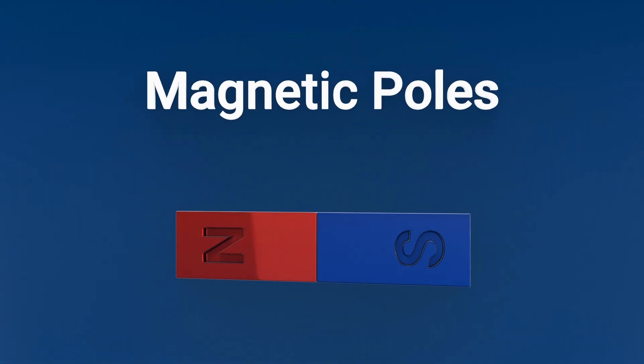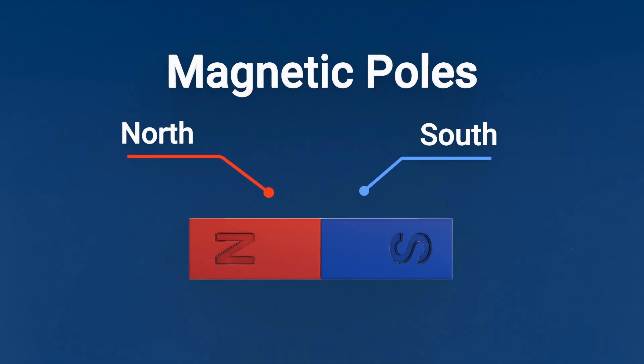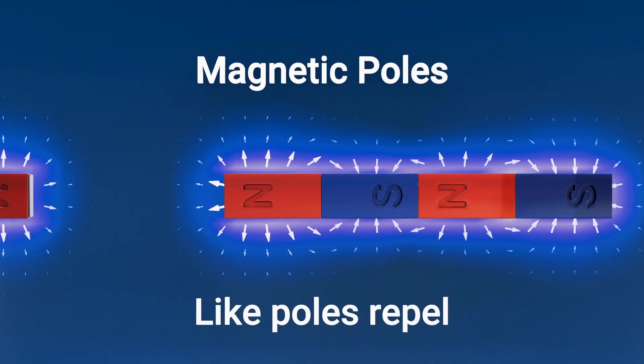Magnetic poles. Every magnet has two poles, north and south. Opposite poles attract, while like poles repel.